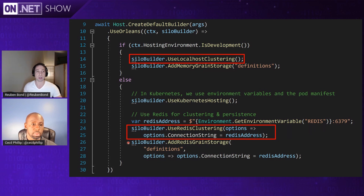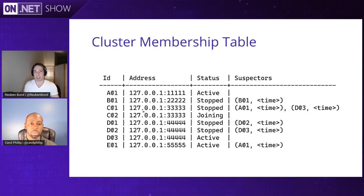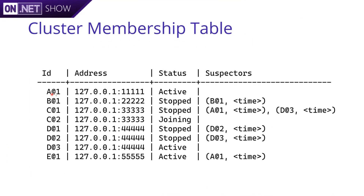If we want to look a little deeper, we might ask what does the cluster membership table actually look like? It's a very simple thing — obviously made-up data here — but essentially you have a table with a few columns: an ID the server generates when it first starts up, a way of contacting it (its IP address and port), its status, and then a 'suspectors' column. This is crucial for working out who is still alive and active in the cluster, which instances are stopped, and so on — part of keeping everything healthy.